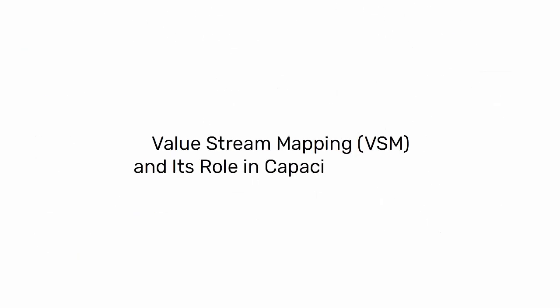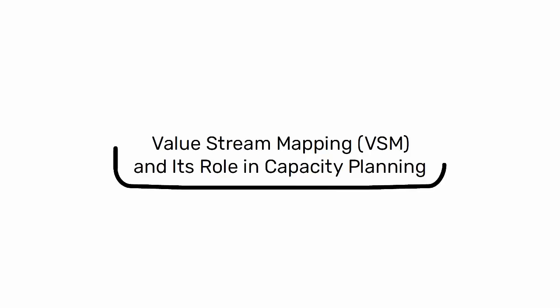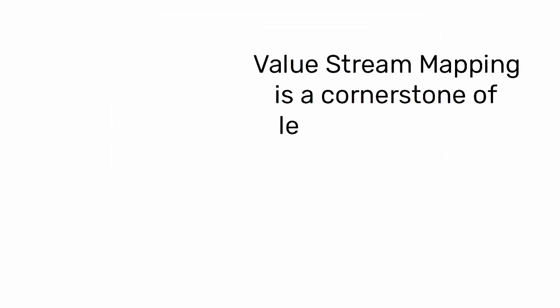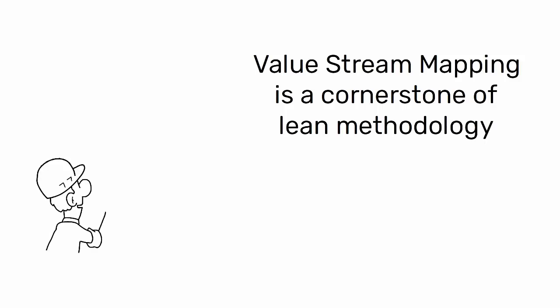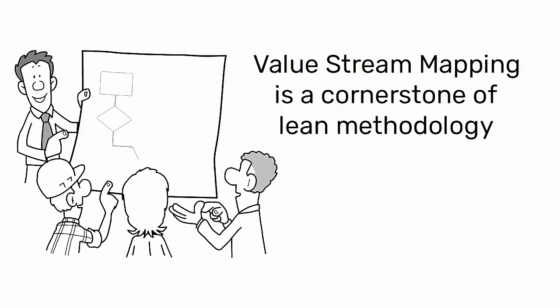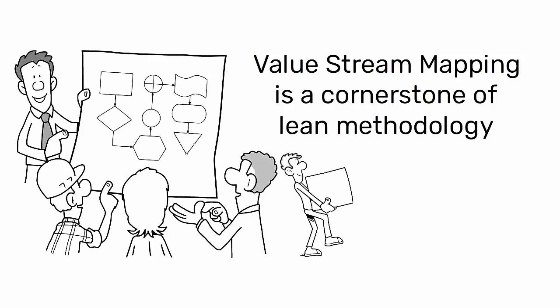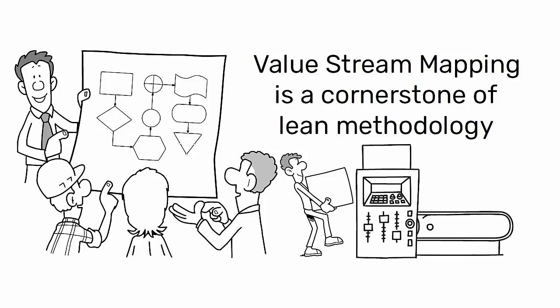Value Stream Mapping (VSM) and its role in capacity planning. Value Stream Mapping is a cornerstone of lean methodology, providing a visual representation of the flow of materials and information through the production process.